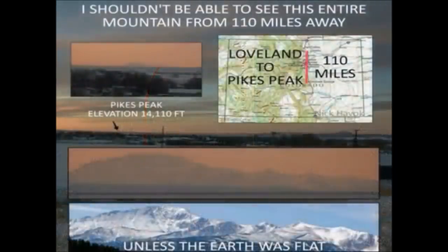The water is flat and level, always, and cannot be anything else, because it is liquid. You know, of course, what liquid is, and what the word means. Here is another proof to show that the water of the ocean is flat and level.